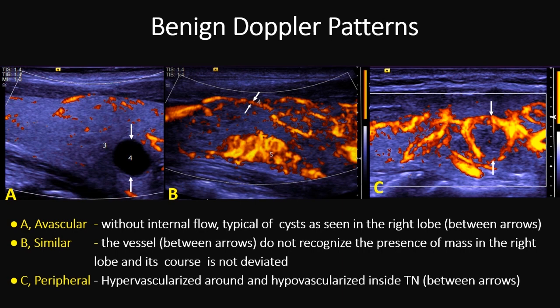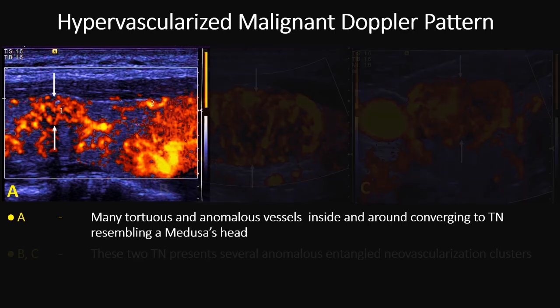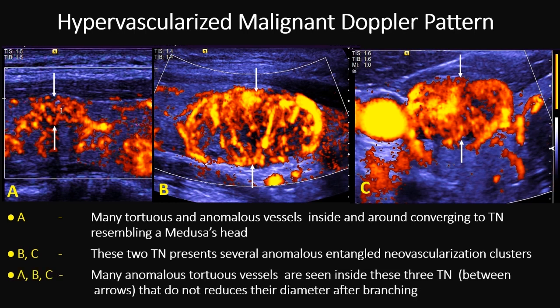Here we have three different hypervascularized malignant Doppler patterns. In this lesion, shown between arrows, we can see many tortuous vessels and many vessels converging to the lesion — very typical of malignancy, resembling a medusa's head. In these two other lesions, the most important features are these anomalous entangled neovascularization clusters and many tortuous, very small vessels, as if fragmented in many places. Also, vessels do not reduce in diameter after branching.